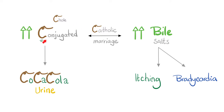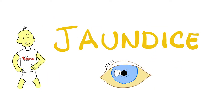Conjugated bilirubin manifests clinically as a Coca-Cola colored, dark red urine. Bile salts manifest clinically as itching and bradycardia. When there is too much bilirubin in the blood — whether direct or indirect — you get jaundice, which is yellowish discoloration of the skin and sclera.